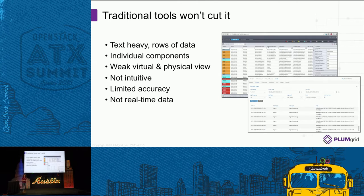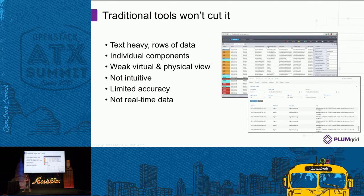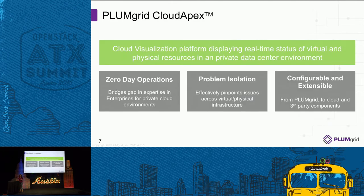We wanted to take a pretty revolutionary approach to the problem of monitoring and visualization. We wanted to combine that with the fact that we have this kernel component running inside each compute node, giving us visibility into the entire OpenStack environment. We wanted to build something very intuitive and easy to consume for anyone from an operational perspective. Together with our SDN solution, we introduced a new product called PlumGrid Cloud Apex. The idea of Cloud Apex is to build a cloud visualization platform that helps bring understanding of the health and condition of the overall distributed system.